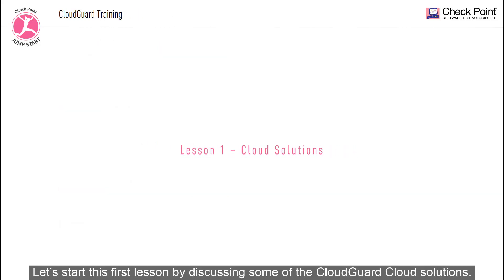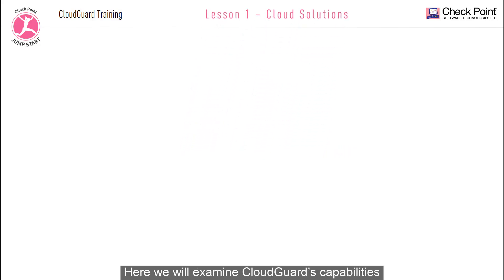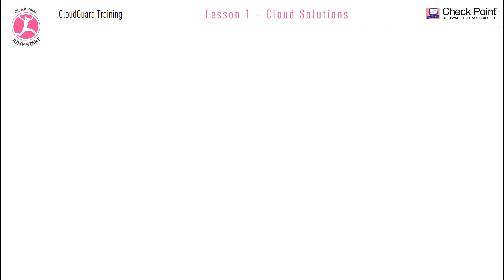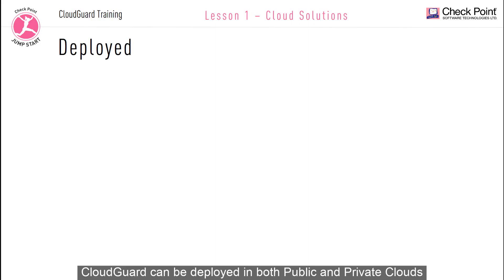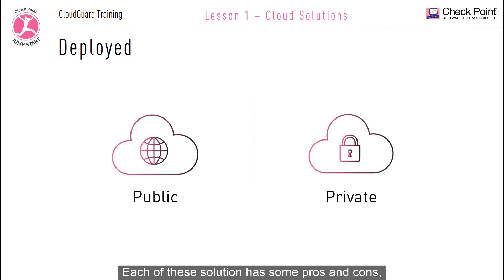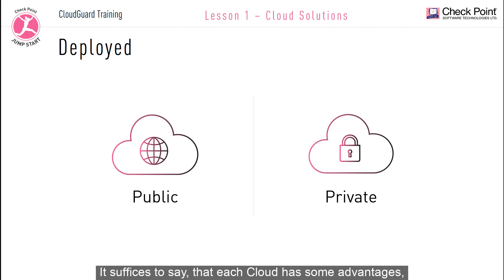Let's start this first lesson by discussing some of the CloudGuard cloud solutions. Here we'll examine CloudGuard capabilities that are used to protect both your cloud assets and your network assets. CloudGuard can be deployed in both public and private clouds. Each of these solutions has some pros and cons, and each cloud has some advantages.